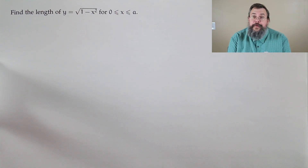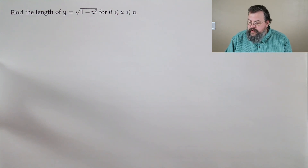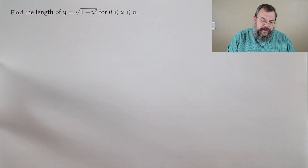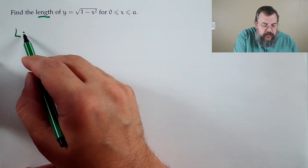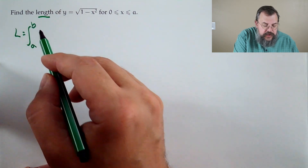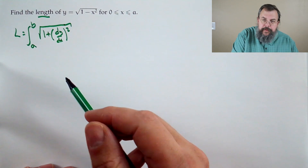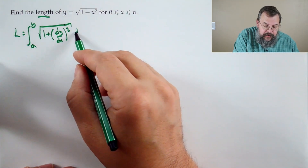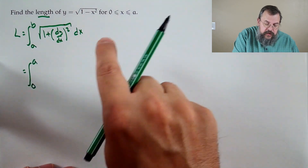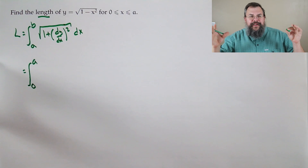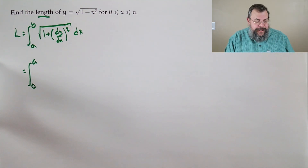Next problem: find the length of y equals the square root of 1 minus x squared, where x goes from 0 to a. Our length formula: integrate from 0 to a of the square root of 1 plus y prime squared dx. We take the derivative: rewrite as (1 minus x squared) to the one-half. The one-half comes down, giving (1 minus x squared) to the minus one-half, times the chain rule derivative minus 2x. The one-half and the 2 cancel.